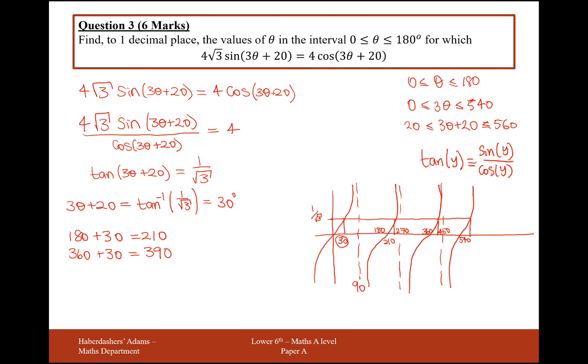And my next angle up here is going to be 540 add 30. But hold on, that gives me 570, which I don't need. That's outside of my range. So for the value 3θ + 20, I've got three answers of 30 degrees, 210 degrees, and 390 degrees.